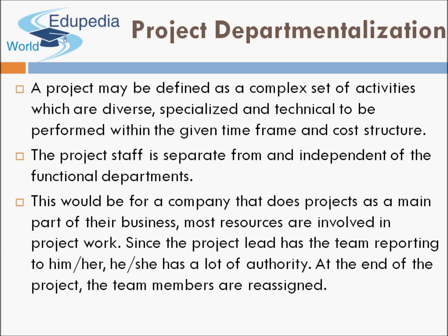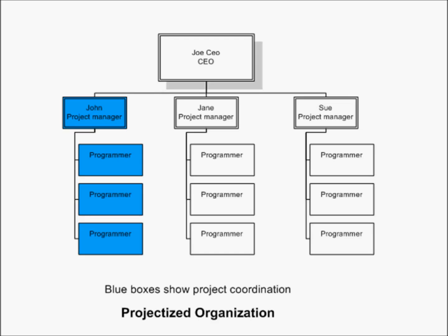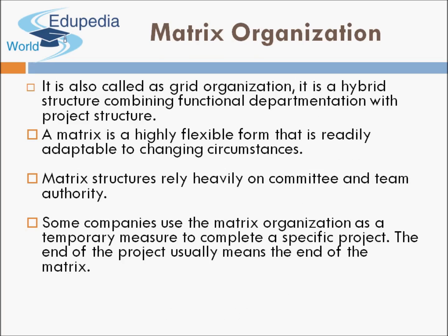When people are dealing with these projects, they are only dealing with the projects and not reporting to their respective functional departments. This structure is for a company that does projects as the main part of its business. Most resources are involved in project work. The project lead has the team reporting to him or her and holds a lot of authority. At the end of the project, team members are reassigned. In the diagram, different project managers each have people working under them.